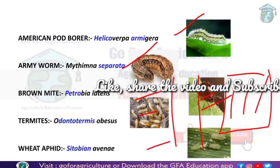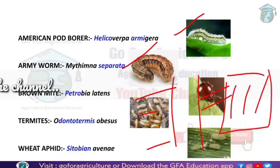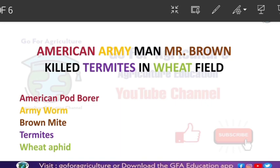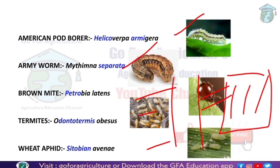Last is Wheat Aphid. These soldiers - Mr. Brown and his soldiers - after killing all the termites, how the land is looking like an avenue. So Sitobion avenae. These are the five insect pests of wheat and also their scientific names. If you remember the statement 'American army man Mr. Brown killed termites in wheat field', you can easily remember their scientific names too, because these scientific names are totally related to the story.